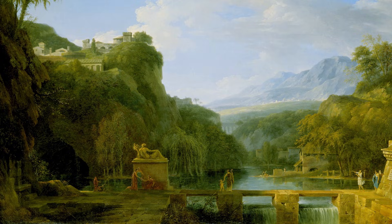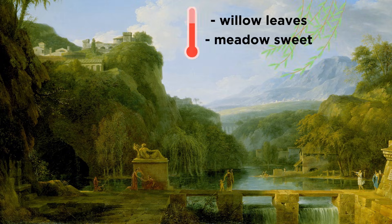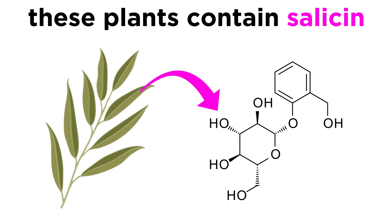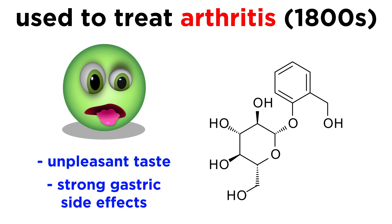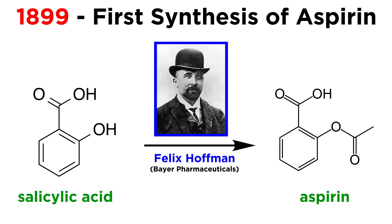As we mentioned, there are stories dating back to ancient Greece regarding the use of willow leaves and meadowsweet to treat fever. These plants were later found to contain salicin, a precursor to salicylic acid, which was used to treat arthritis by the early 1800s. However, it was not well tolerated by patients due to its unpleasant taste and strong gastric side effects. But in 1899, a chemist named Felix Hoffman at Bayer Pharmaceuticals synthesized aspirin from salicylic acid.